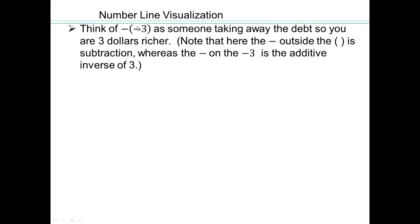So let's do some visualization. Let me say I want to think about negative of negative 3. So negative 3 can be thought of as a debt. If I took away your debt, then you're $3 richer, right? So basically negative on the negative 3 makes it additive inverse of negative 3, which is 3.